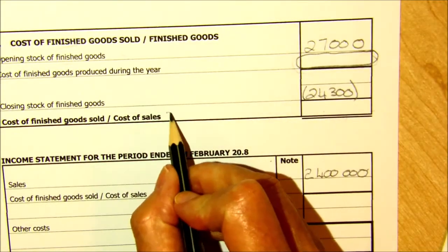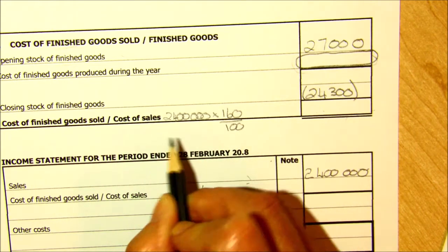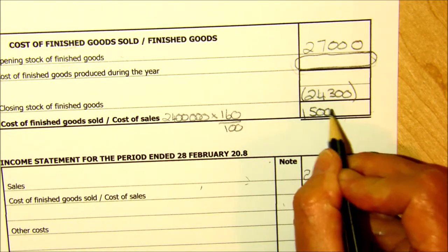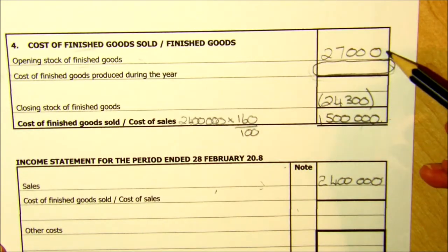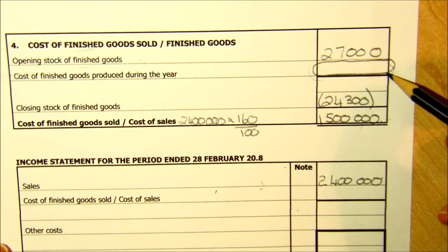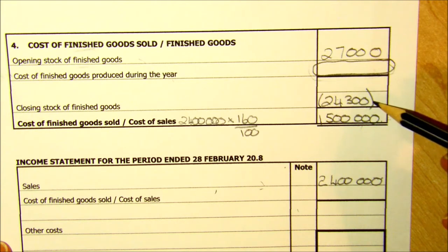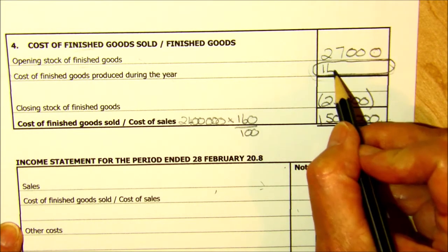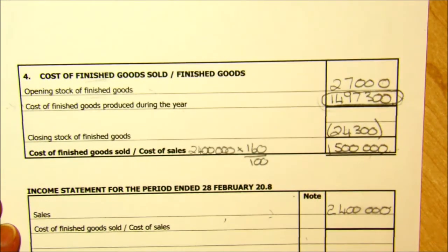You are given that total sales for the year are 2,400,000, and that the business uses a markup of 60% on cost. So: 2,400,000 divided by 160 over 100, because the 2.4 million includes the cost price of the goods. We can therefore calculate our cost of sales as 1,500,000 — that's the cost price of the goods that have been sold. So: 27,000 plus some extra goods, minus 24,300, equals 1,500,000. Working backwards on the calculator: 1,500,000 plus 24,300 minus 27,000 gives us the missing figure of 1,497,300.